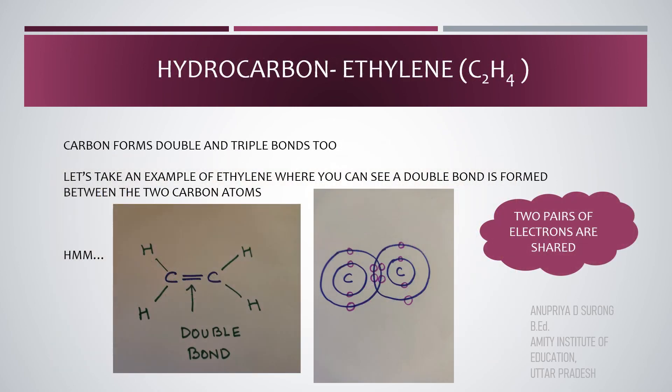Carbon forms double and triple bonds too. Let's take an example of ethylene, where you can see a double bond is formed between two carbon atoms, meaning two pairs of electrons are shared. So, double bonds.